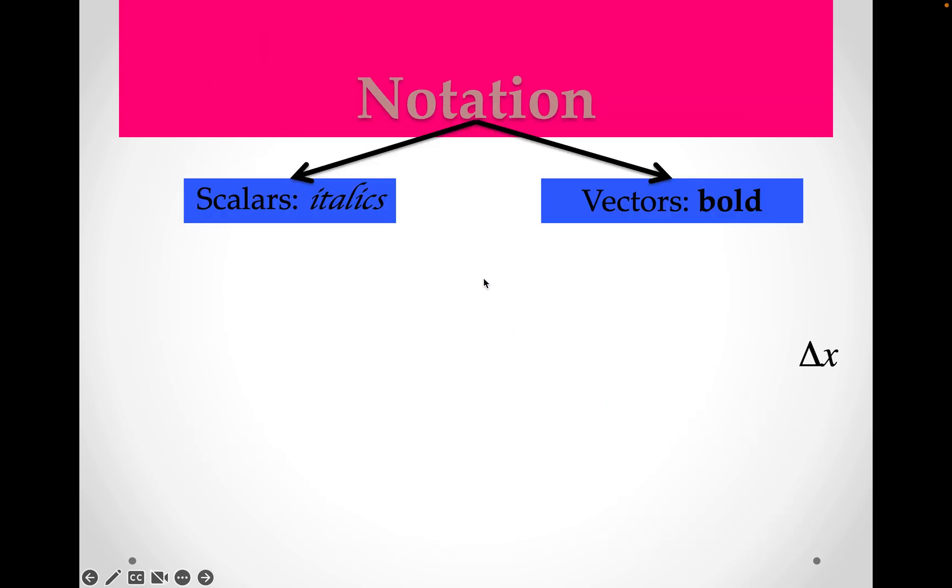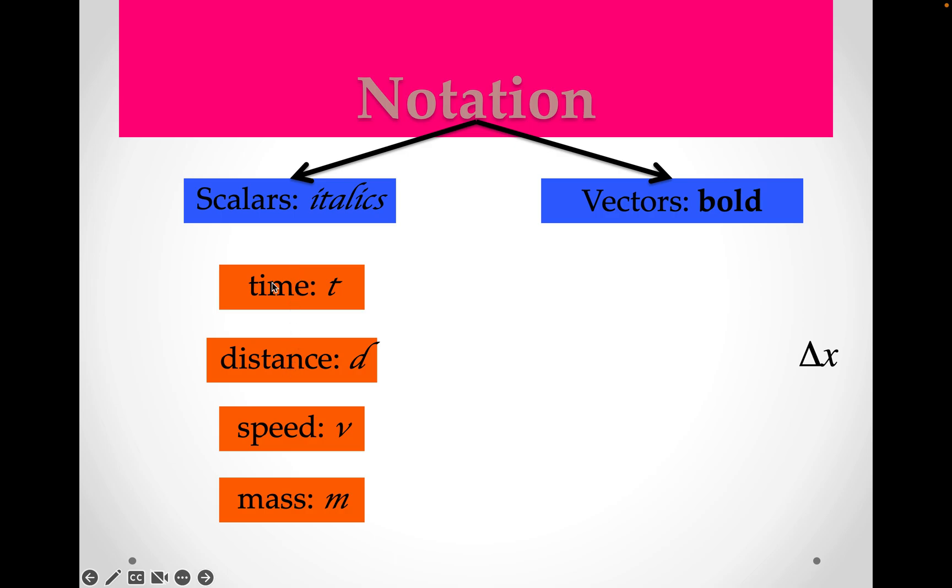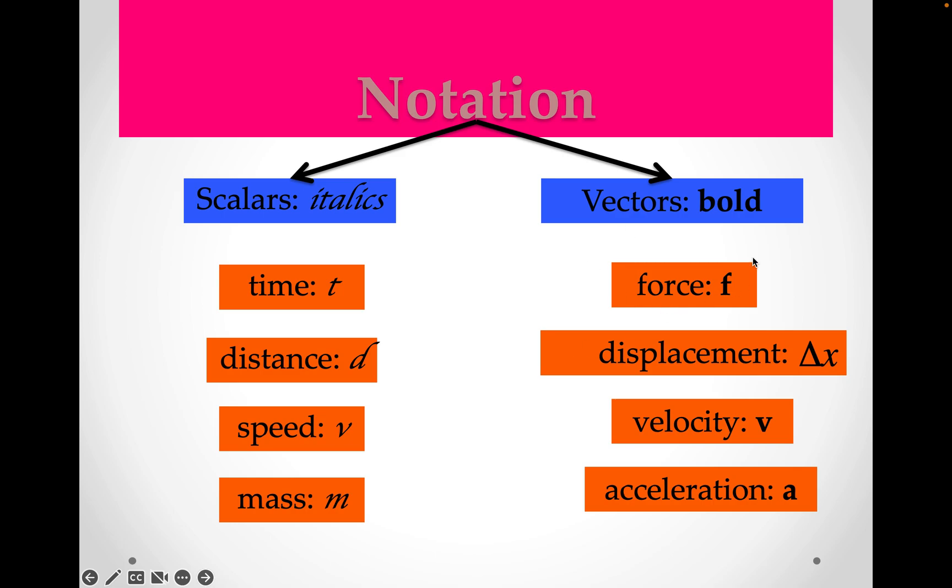You will know that scalars are size only, number only: time, distance, speed, mass. Vectors would be the force, the displacement, the velocity, the acceleration. All of these have a direction. These only have the number.